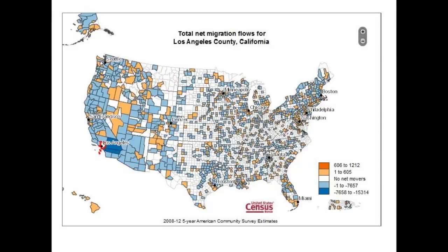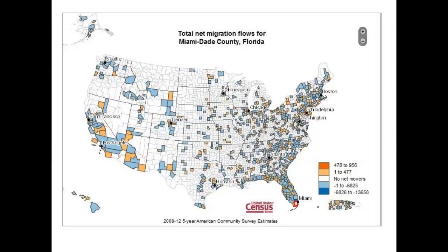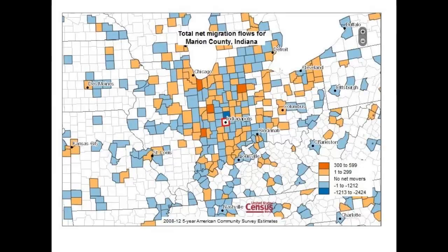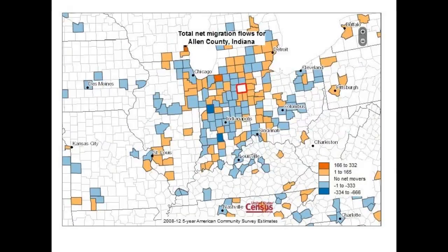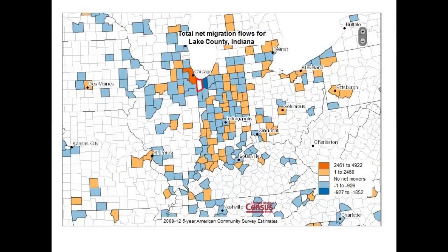The same is true for Los Angeles — on the western coast you can see distance decay as you go farther away, but people are definitely moving from LA to Miami, New York, and the urban core along the eastern coast. Chicago shows distance decay, as do Miami, Denver, and Indianapolis. Zooming into Indianapolis and Marion County, you can see how in- and out-migration decreases for counties farther from Marion County. In Lake County, where Gary is located, you can see the strong pull and influence of Chicago.